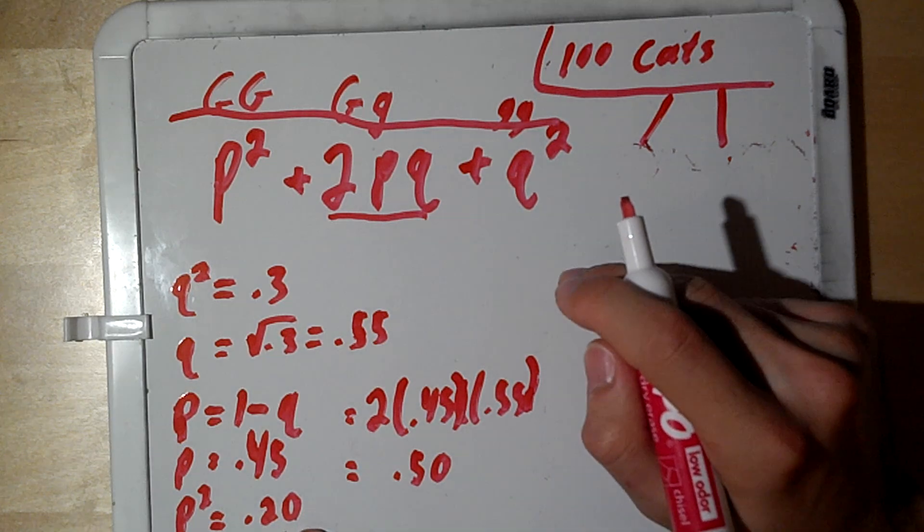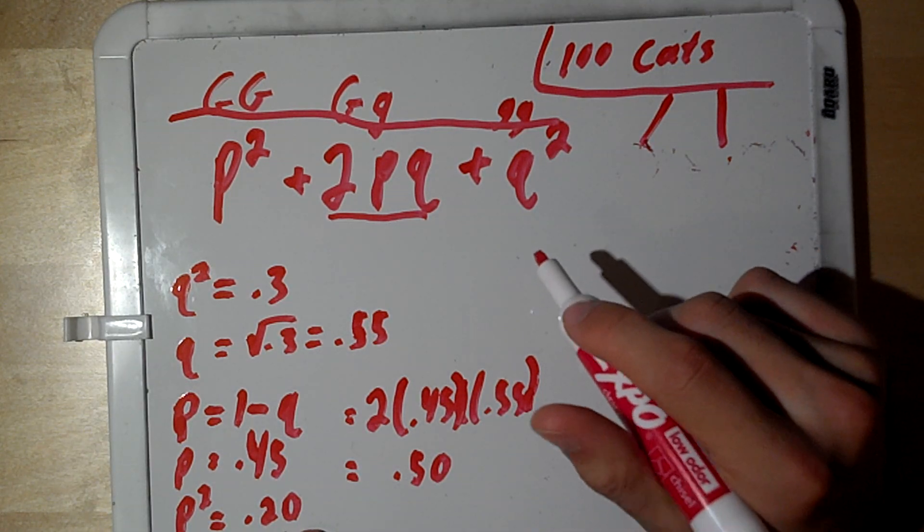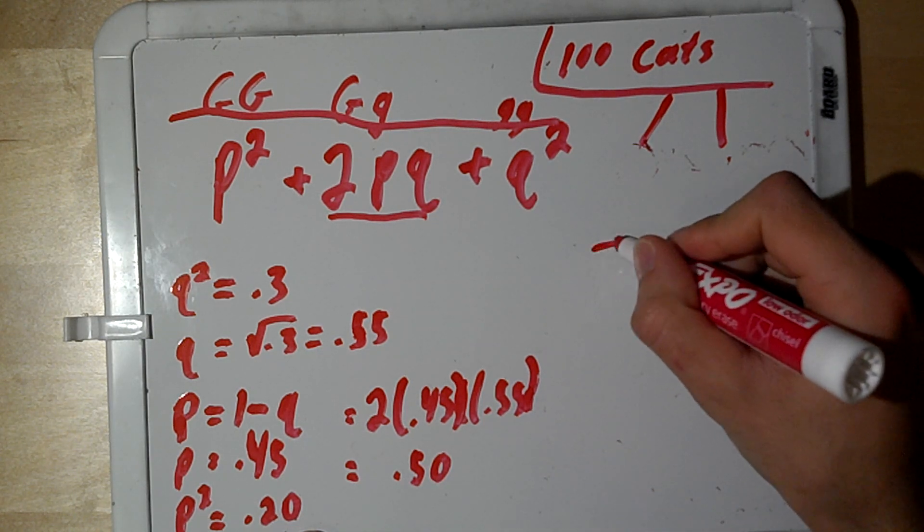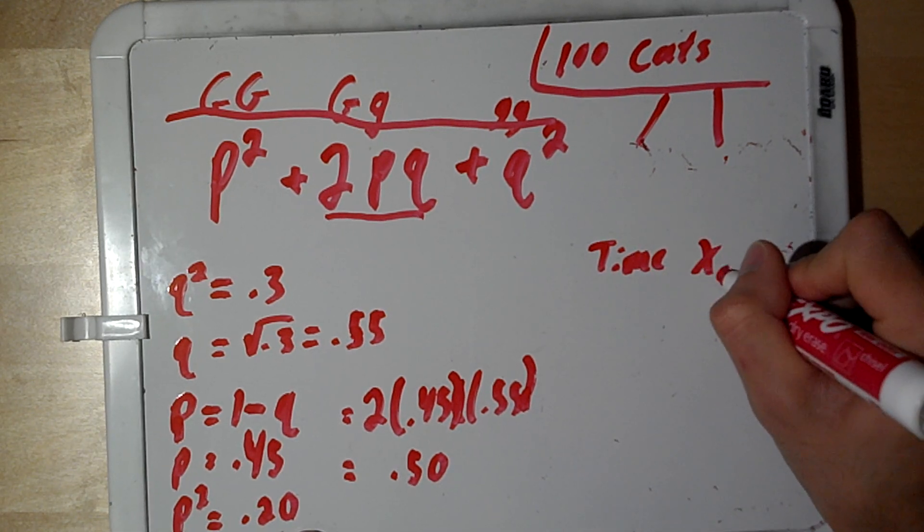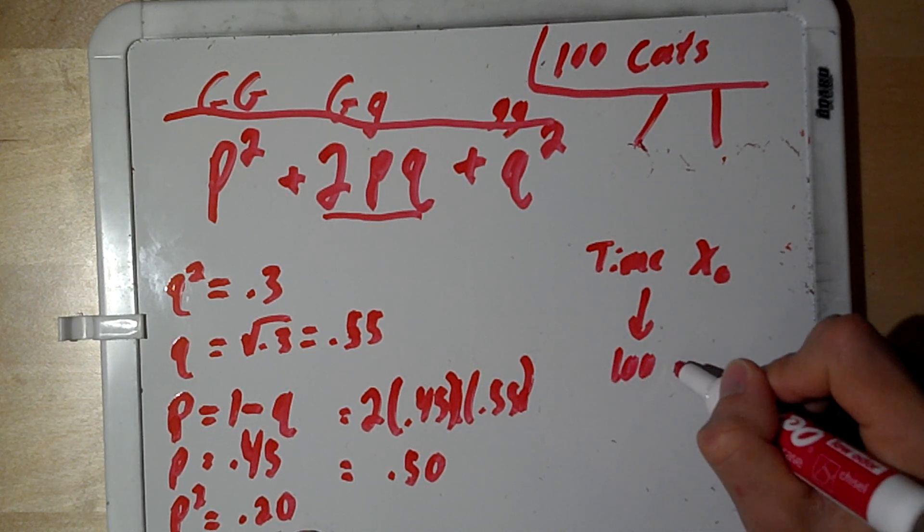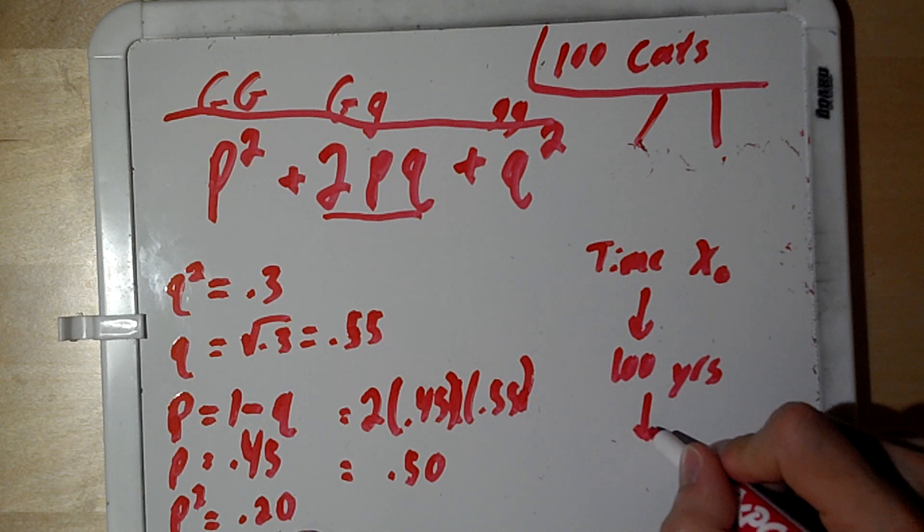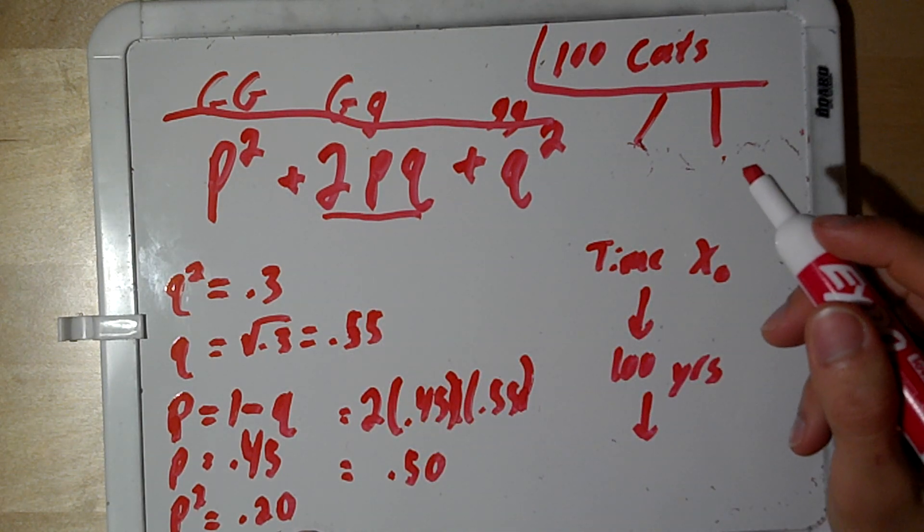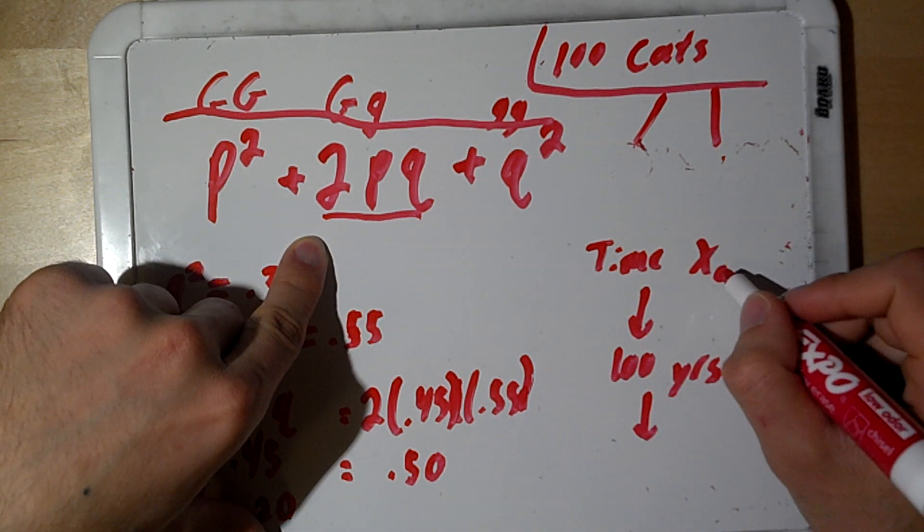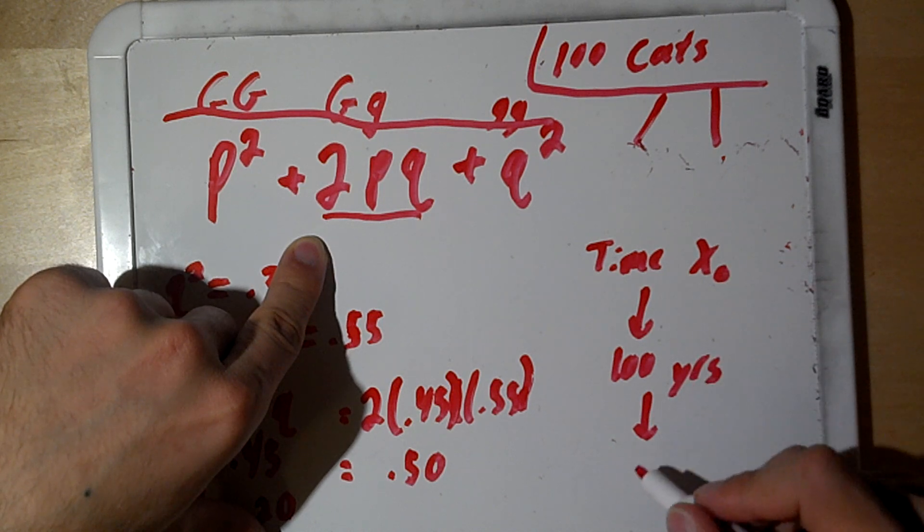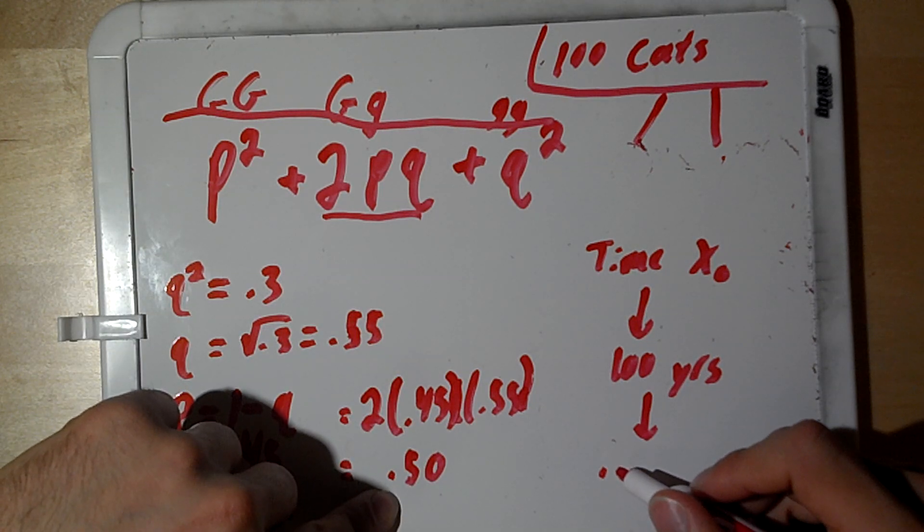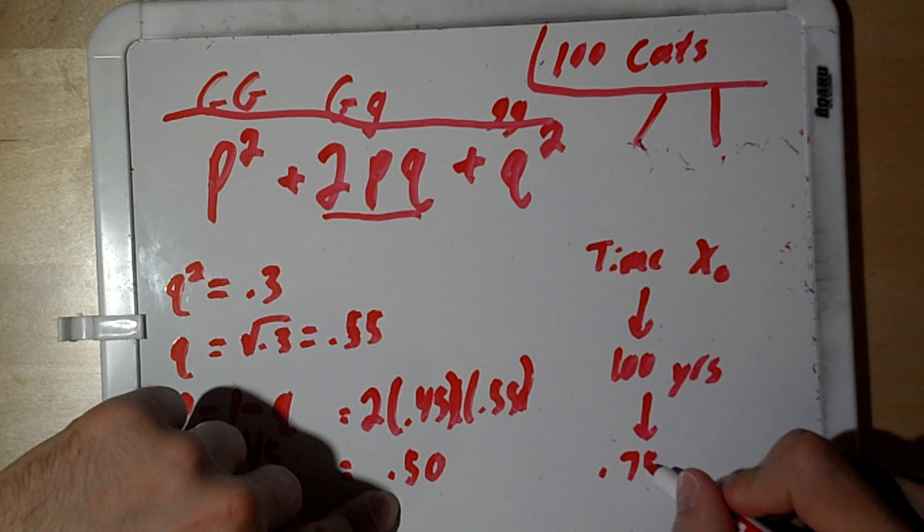Now, where we use the Hardy-Weinberg principle is when we compare this population. Suppose we calculate these allele frequencies at time point, we're going to say time point x₀. So, the starting point. And we come back about, let's say, 100 years. After 100 years, we find that these allele frequencies have changed. So, for example, for the heterozygous, we said it was 0.50 here at x₀. And after 100 years, we find that the heterozygous genotype frequency has shifted to 0.75. This is completely hypothetical.